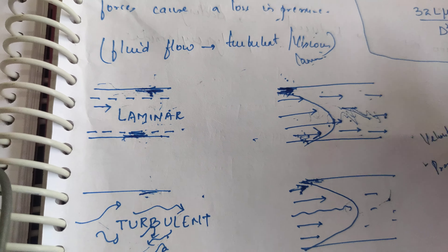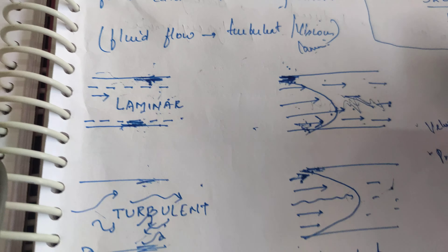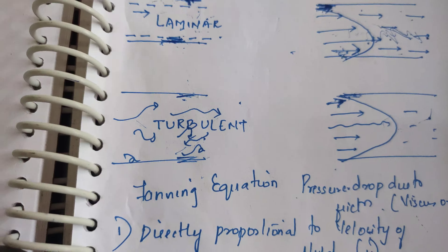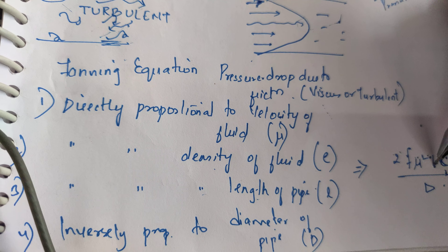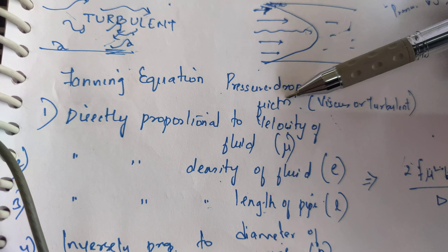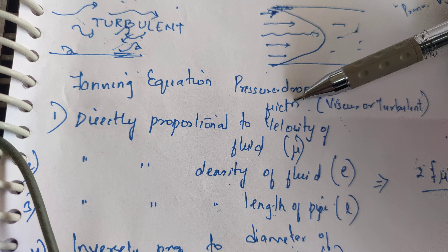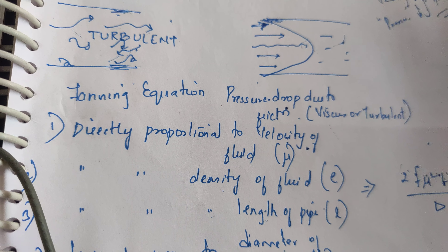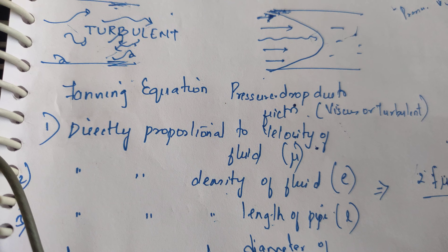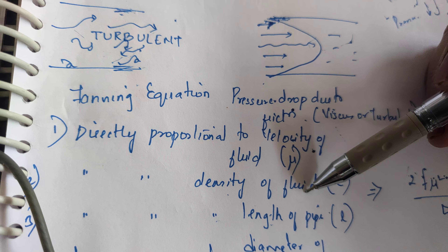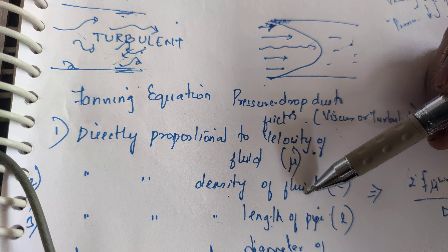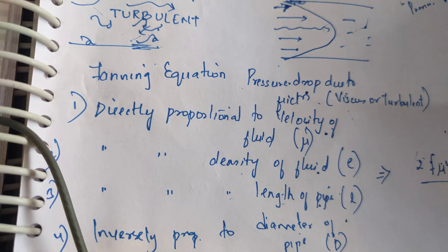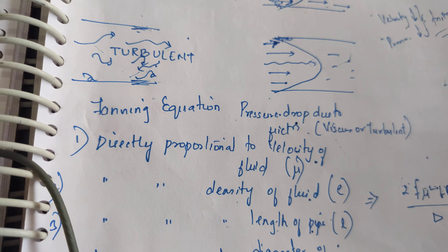To understand this phenomenon, Fanning gave the equation: pressure drop = 2f·u²·L·ρ / d. The pressure drop due to friction in laminar or turbulent flow is directly proportional to the velocity of the fluid — more velocity means more friction. It is also directly proportional to the density of the fluid and the length of the pipe, but inversely proportional to the diameter of the pipe — more diameter means less friction.